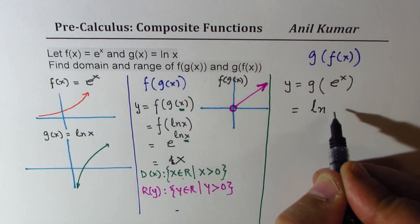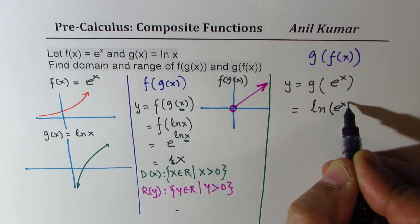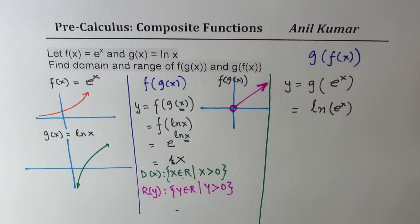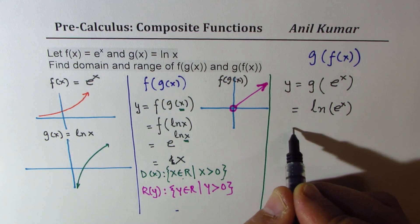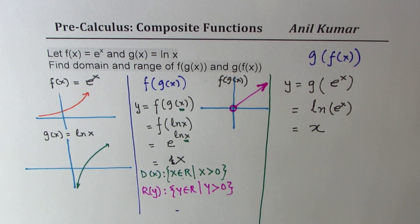Perfect. Now here again, what is the domain? Domain is not decided by e to the power of x. Well, let me rewrite this as x. This is the reciprocal function; however, we know the restriction now.